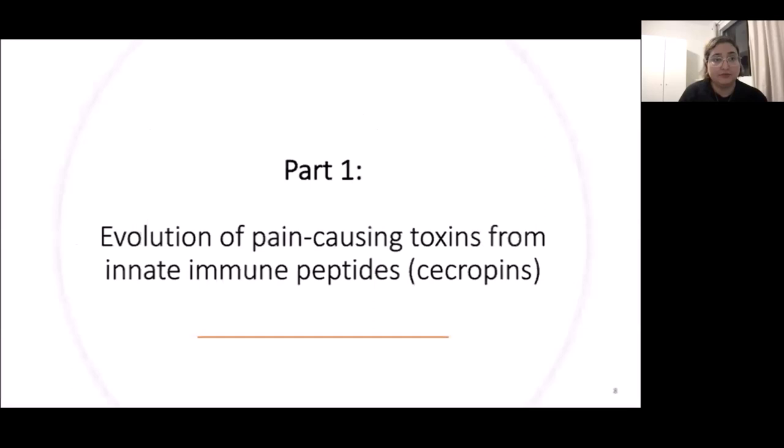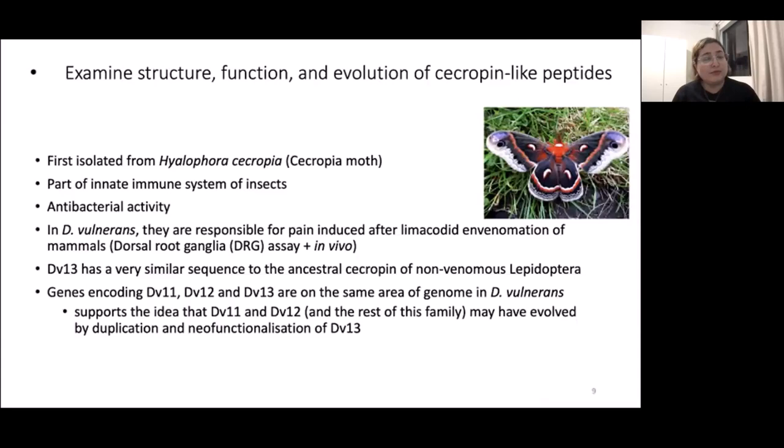Sacropines, as you probably know, are part of the innate immune system of insects. They usually have antibacterial activity. They are linear cationic peptides. In Doratifera vulnerans, they are also responsible for the pain induced after envenomation of mammals. We showed that both on DRG assays and in vivo in mice. DV13, which was one of these peptides in Doratifera, has a very similar sequence to ancestral sacropine of non-venomous Lepidopterans. But the other two that are more dominant in the venom are from the same area of the genome, so they are definitely similar to DV13, but they have some differences in the features and they are the ones that are causing pain.